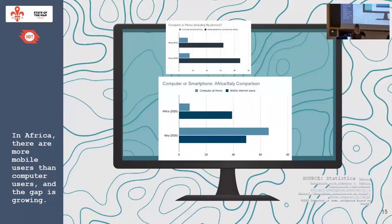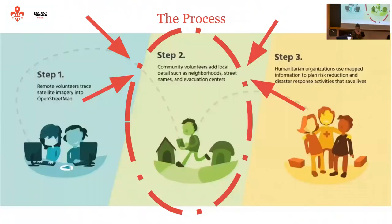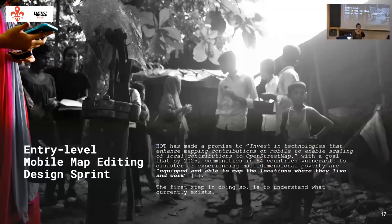I'm a mobile engineer. I'm going to focus on that last part. More people in Africa have smartphones than computers — that's the opposite of Italy. Smartphone use in Africa is growing really fast. People have smartphones; they don't have computers. Most OSM tools are built for desktop. This means that step two has a problem: if their devices are mobile, how do you let them use it? HOT has promised to invest in technologies to help people in our 94 countries vulnerable to disasters contribute to the map.